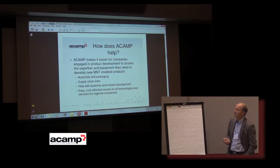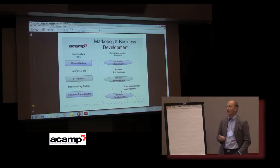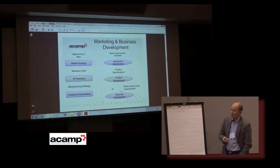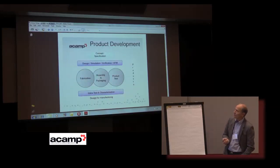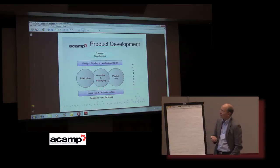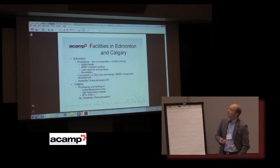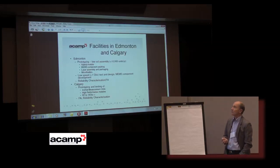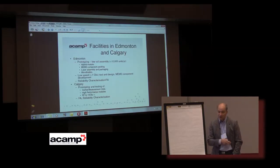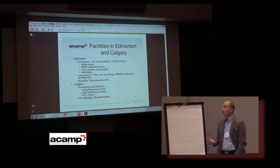We help set up supply chain links, we help with business and market development, and we provide easy and cost-effective access to technologies for regional companies. We focus on product development — specifically engineering, assembly and packaging, product test, and in particular design for manufacturability — including lots of tests and characterisation to make sure products are worthy and will work successfully for our customers. We have facilities in both Edmonton and Calgary with clean rooms: about 2,000 square feet in Edmonton and 1,000 square feet in Calgary, capable of everything from small-scale manual prototyping through to low volume assembly supporting early market phase of a new M&T product.